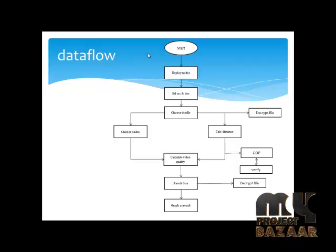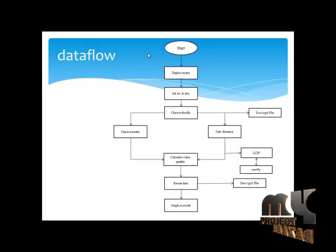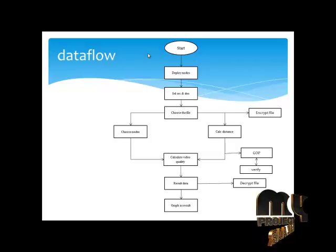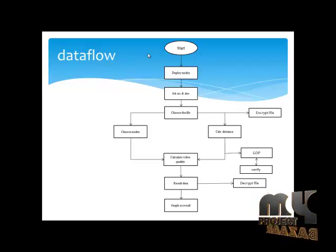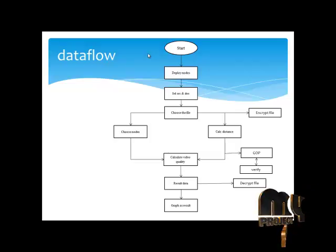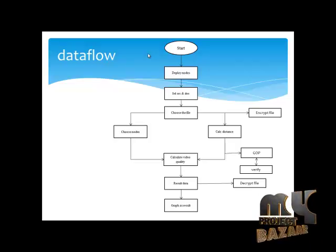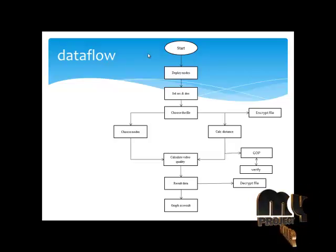In this process, we are choosing video files as the source to transmit from source to destination. The video quality can be checked by making a group of pictures. We split the video files into certain images to check the quality of the videos. After encrypting the file, it is transmitted to the destination using intermediate nodes, with the group of pictures attached.